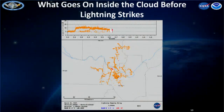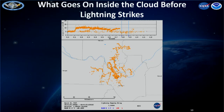Here's where the flash began and it went to ground way over here. It's not enough to know the lightning struck the ground at a particular location — the source, the storm that's making the lightning, is somewhere entirely different from where it struck.